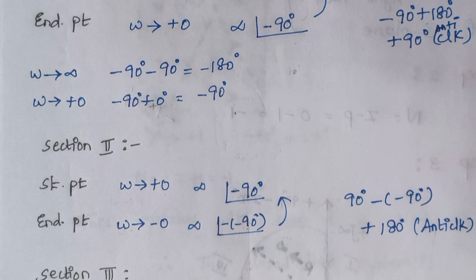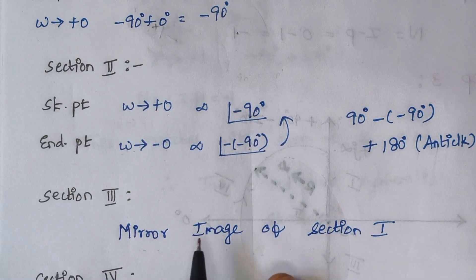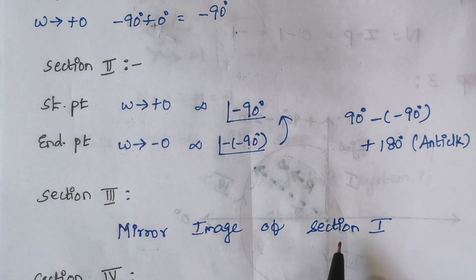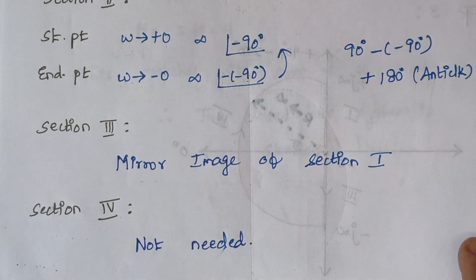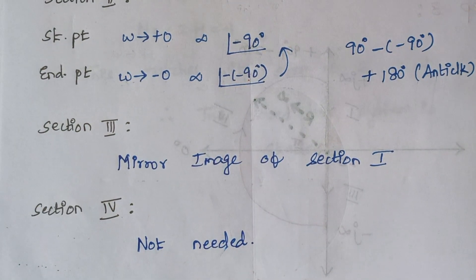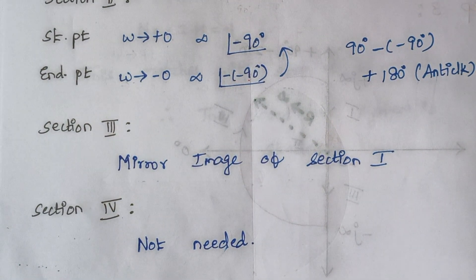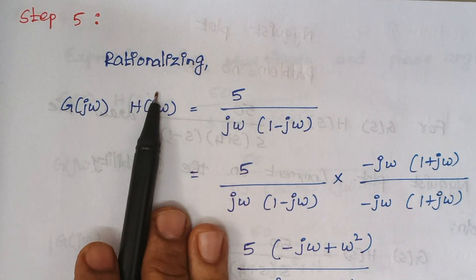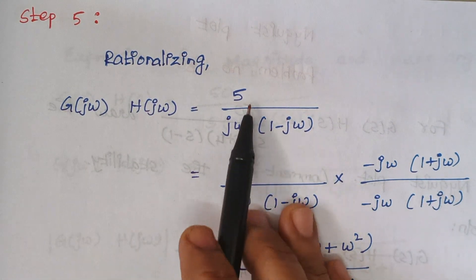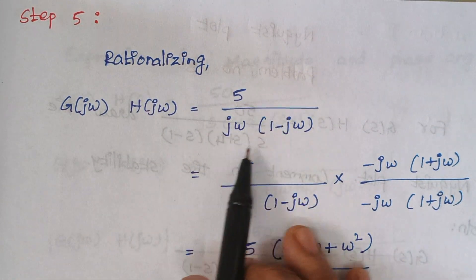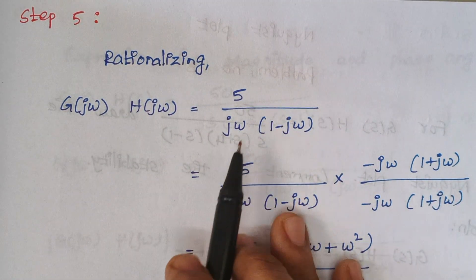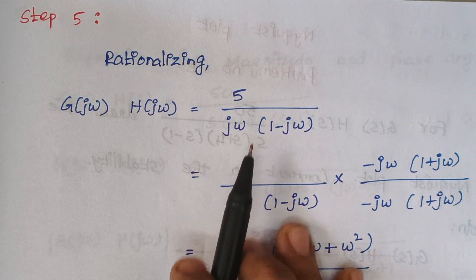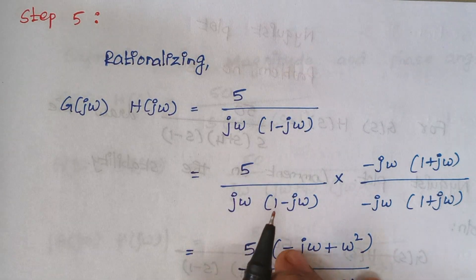Section 3 is simply the mirror image of section 1, and section 4 requires no analysis. Step 5 is rationalizing, where we have replaced s with j omega. Rationalizing means taking the complex conjugate for the denominator terms.